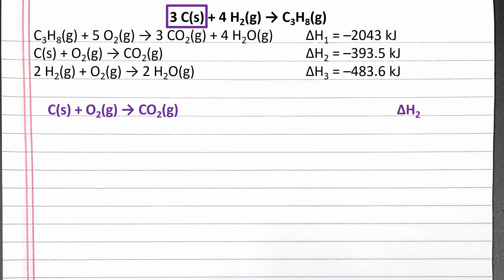So we need to multiply the entire equation by three. When we multiply all the coefficients in the equation by three, we also multiply the change in enthalpy for the reaction by three. Now we have three moles of solid carbon as a reactant.